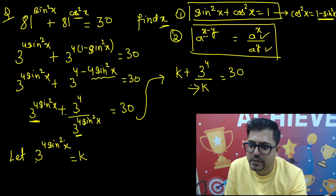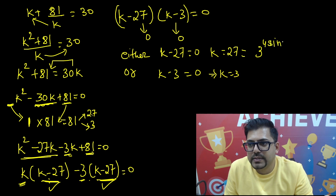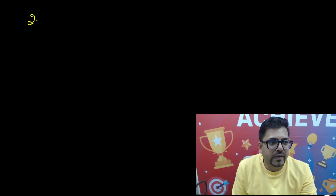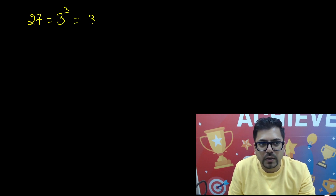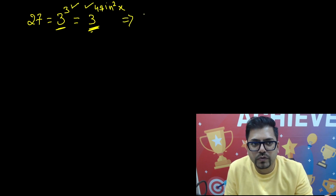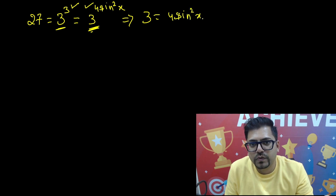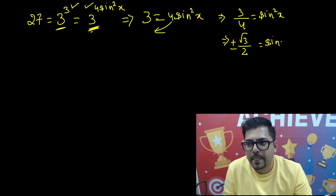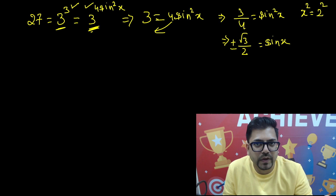We assumed k equals 3 raised to power 4sin²x. For k equals 27: 3 raised to power 4sin²x equals 27, which is 3 raised to power 3. Since the bases are equal, the powers must be equal, so 4sin²x equals 3, meaning sin²x equals 3/4. Taking the square root of both sides (with plus-minus): sinx equals plus or minus √3 over 2. Whenever removing a square, we always apply the plus-minus sign.